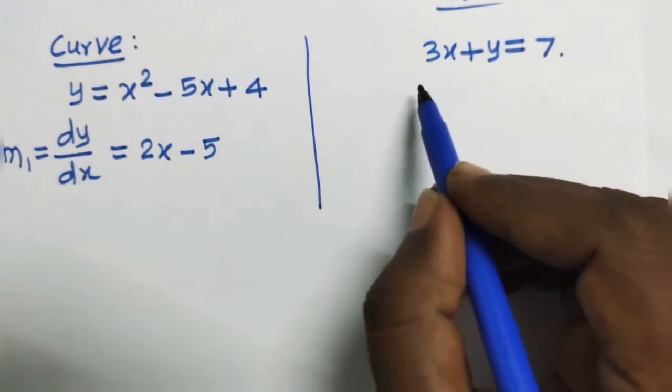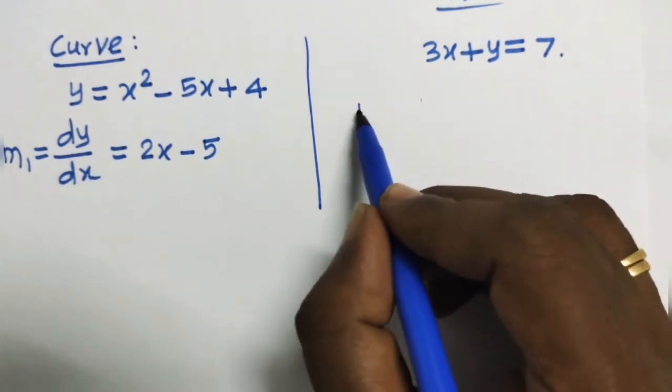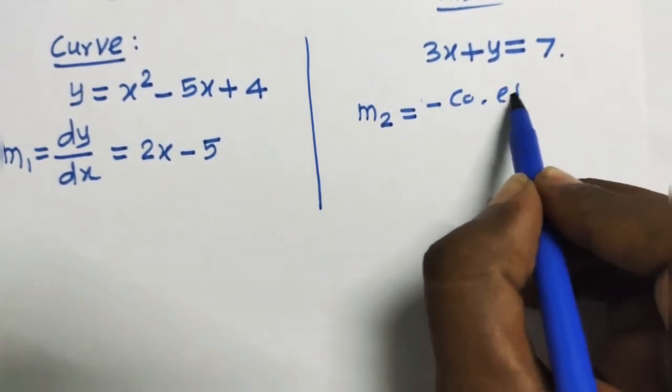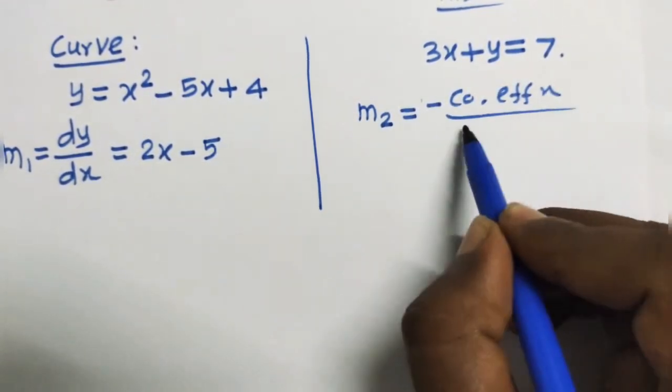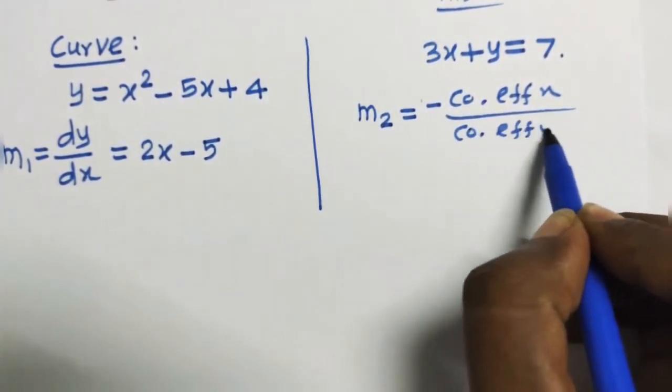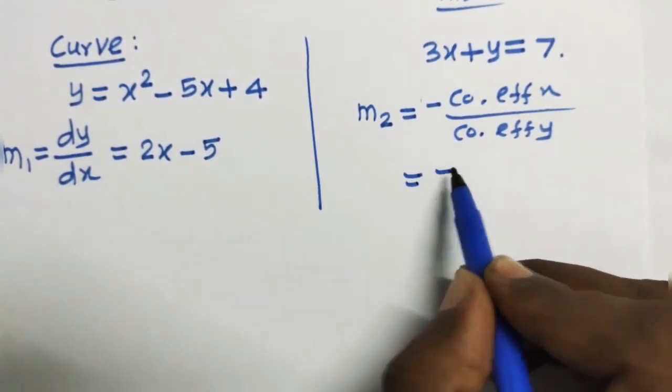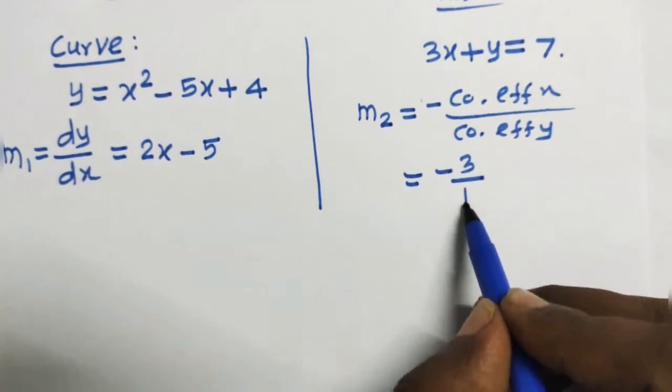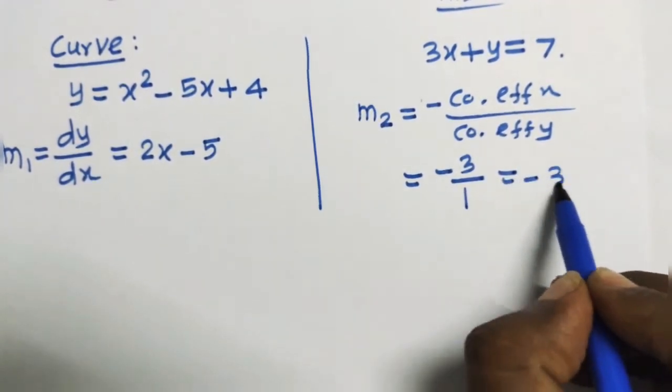And next one, slope of the line that is taken as m2 minus coefficient of x divided by coefficient of y, which is equal to minus coefficient of x is 3 divided by coefficient of y is 1, which is equal to minus 3.